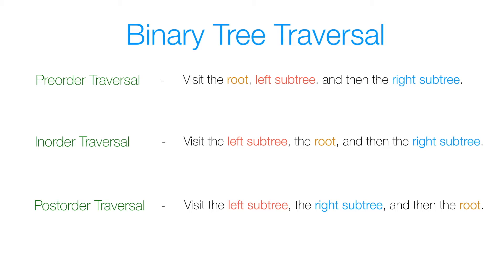Please keep in mind the recursive definition for a binary tree as we approach these methods. As a recap, the recursive definition says that a binary tree consists of a root node, a left subtree, and a right subtree that are also binary trees.